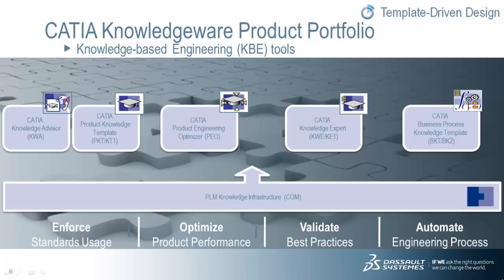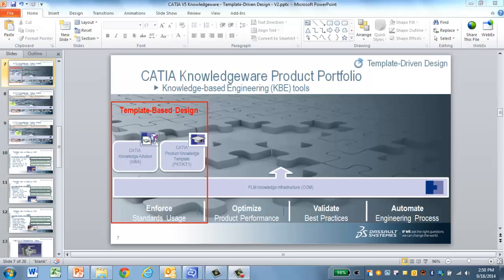CATIA KnowledgeWare is a suite of products, and each product has a different purpose. You don't have to do the whole thing, and they are scalable. The four columns represent the general value areas of CATIA KnowledgeWare: Enforce, Optimize, Validate, and Automate, each with different KnowledgeWare products associated with it. We're going to now focus on the Enforce column, which includes the CATIA KnowledgeWare products for template-driven design.